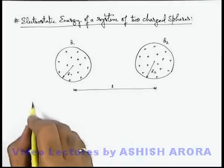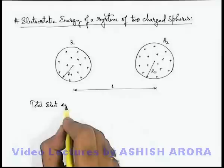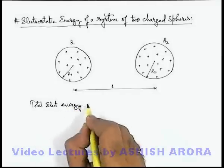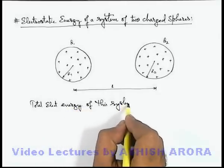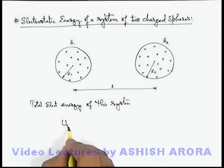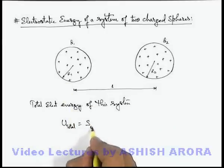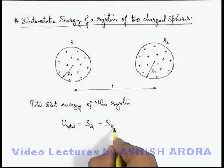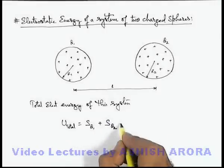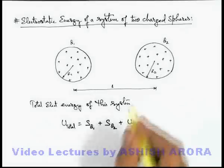Now if we talk about the total electrostatic energy of this system, this can be given by the method which we have discussed in the previous section. This will be the self energy of the sphere having a charge q1, plus self energy of the sphere having a charge q2, plus the interaction energy of sphere 1 and 2.